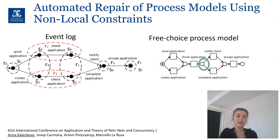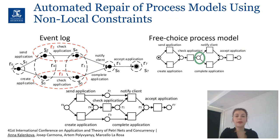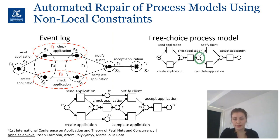For this we apply the synthesis techniques to cover these places and find additional regions that can be further converted to places of the Petri net. Here we have discovered two additional regions R2 and R3 that correspond to places, and these places are added to the resulting model and make it more precise.